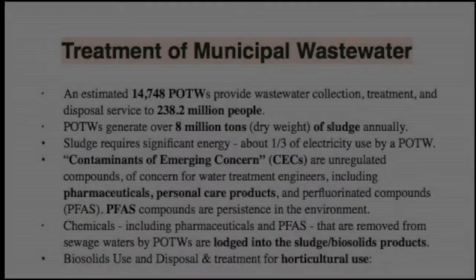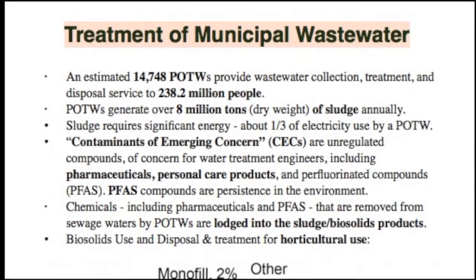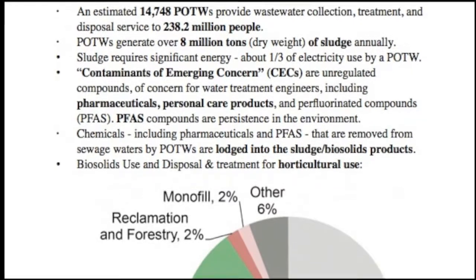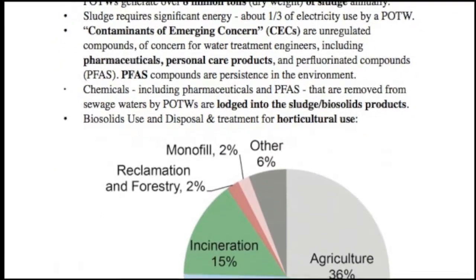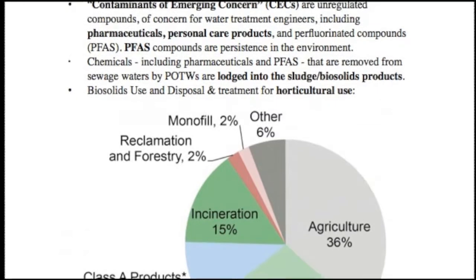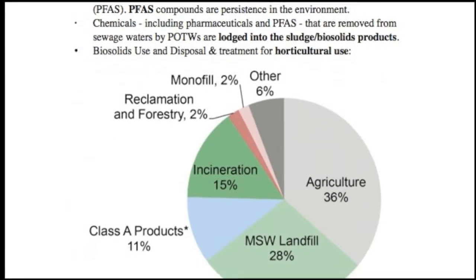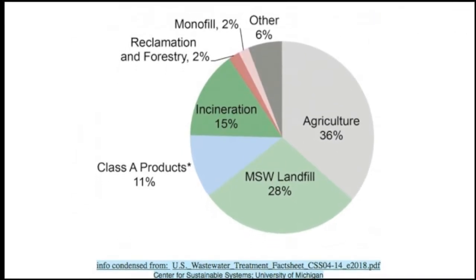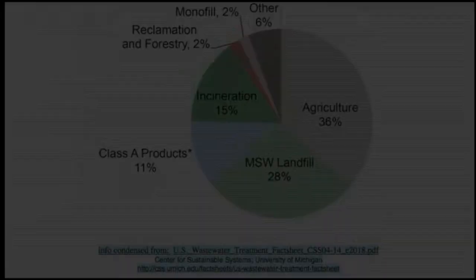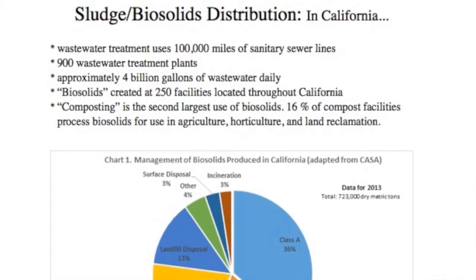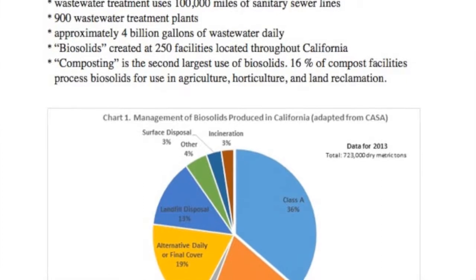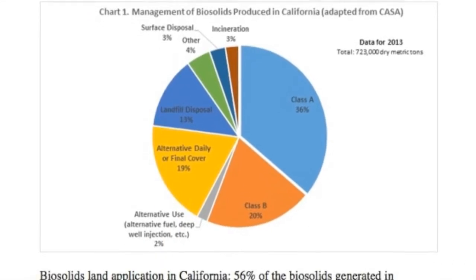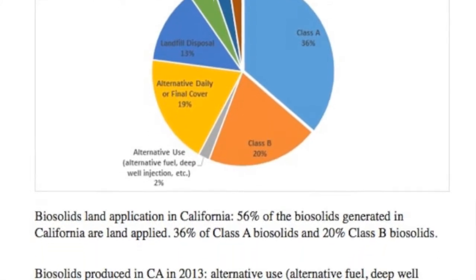All of these I have cited from the University of Michigan. There are 14,746 wastewater treatment plants in the country, and 56% to 60% of all sewage waste is land applied. In California, there are 900 wastewater treatment plants, 4 billion gallons of wastewater daily, 250 biosolids composting facilities, and 56% of all California sewage sludge waste is land applied.